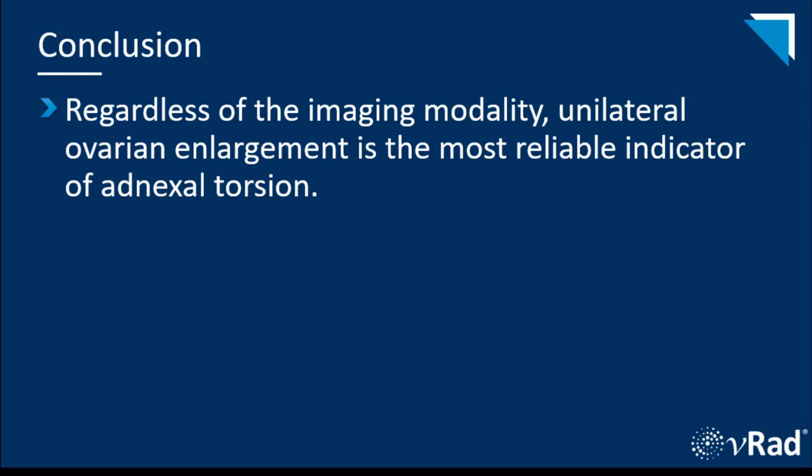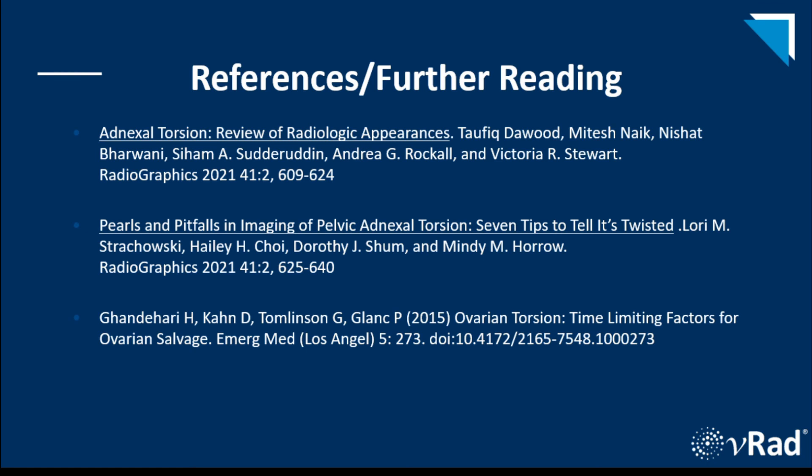Regardless of the imaging modality, ovarian enlargement and edema are the most reliable indicators of adnexal torsion. This diagnosis must be considered whenever you see a unilaterally enlarged and edematous ovary, regardless of modality. The presence of preserved arterial blood flow does not exclude adnexal torsion — rather, internal blood flow is a sign of a potentially salvageable ovary. Because of the non-specific clinical presentation, torsion may first present on ultrasound, CT, or MRI. Aside from acute pelvic pain, nausea and vomiting are the most common symptoms. Delays in diagnosis decrease the chances of salvaging the ovary. Thanks again for watching.